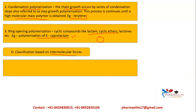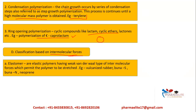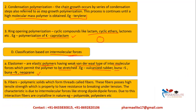The next classification is based on intermolecular forces. Elastomers are elastic polymers that are easily stretchable due to weak van der Waals intermolecular attractions — examples are vulcanized rubber, Buna-S, Buna-N, and neoprene. Fibers are polymeric solids that form threads with high tensile strength, so they do not break easily under tension; they have stronger dipole-dipole forces — examples are polyamides and polyesters.